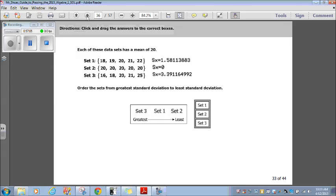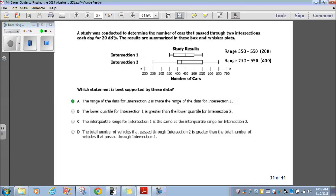Let's move on to question 34. A study was conducted to determine the number of cars that pass through two intersections each day for 20 days. The results are summarized in these box and whisker plots. If you remember from your statistics, your teacher should have gone over this. This is basically four different quarters here. From here, that's the beginning. That's quarter one data. That's the middle data. And here is quarter three and then quarter four.